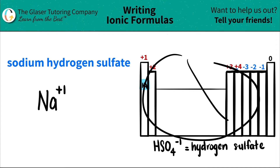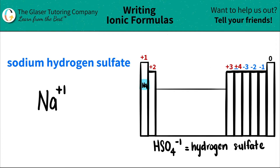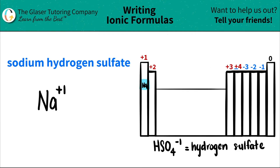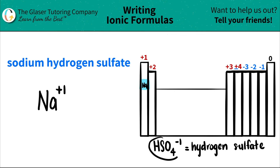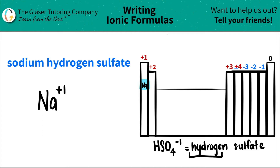Remember, polyatomic ions are never going to be on the periodic table — they need to be memorized. So I put the one that's down here. As you can see, the whole hydrogen sulfate is HSO4 with a minus one charge. Remember that sulfate is SO4, and the hydrogen — there's only one here — so I just put one H in front. So it's HSO4 with a negative one charge.